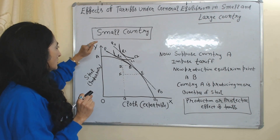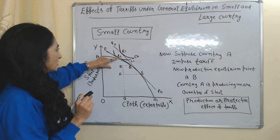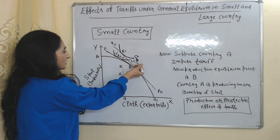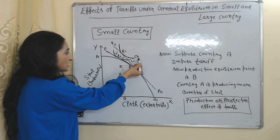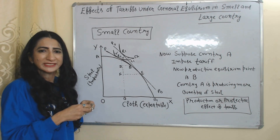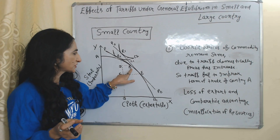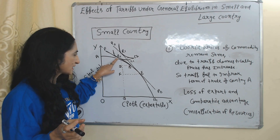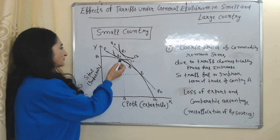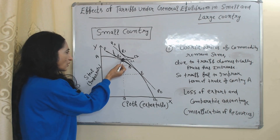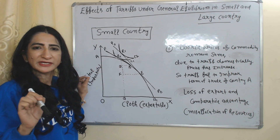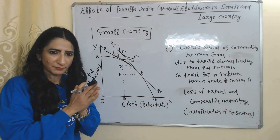After imposing tariff, the consumption equilibrium point is R2. Here you can see the international exchange ratio line has shifted backward and the community indifference curve has also shifted backward from C2 to C1, meaning there is a loss in welfare of country A. After imposing tariff, the new production equilibrium point is B and consumption equilibrium point is R2. Exports are equal to DB and imports are equal to R2D.